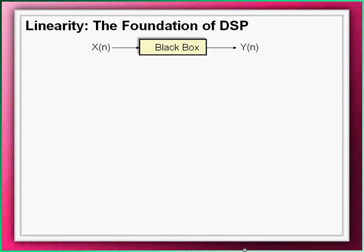To understand linearity better, think of a system as a black box into which we place an input Xn and receive an output Yn. Let the input consist of four samples at four distinct instants of time.